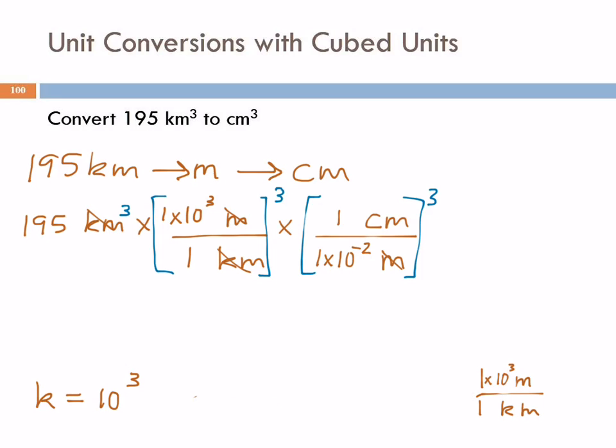So let's write that out in a more expanded form. We're going to get 195 cubic kilometers times 1 times 10 to the 3rd cubed meters cubed over 1 cubed kilometers cubed. Because when you cube this whole term, you cube the number and the unit.